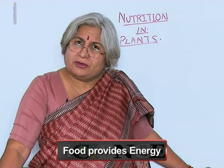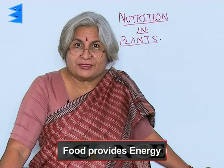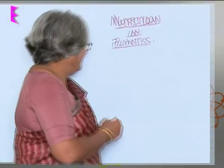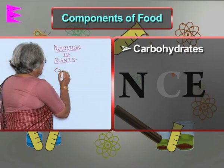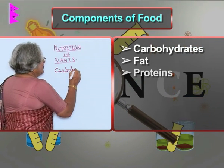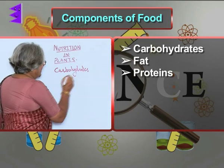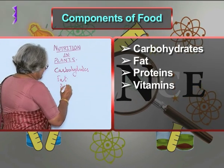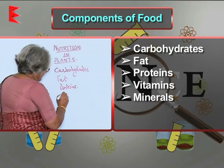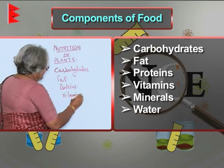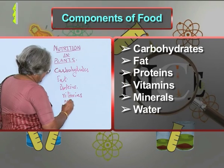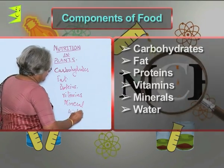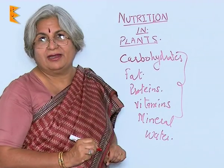What is there in food? I know you studied it in class 6. There are some components of food like carbohydrates, fat, protein. What next? Vitamins, minerals, and of course water.